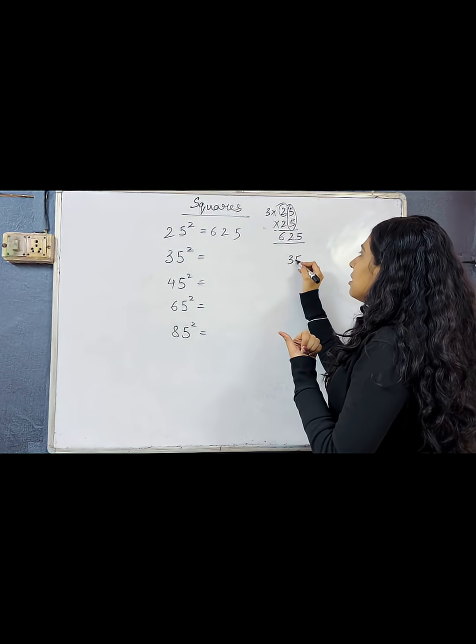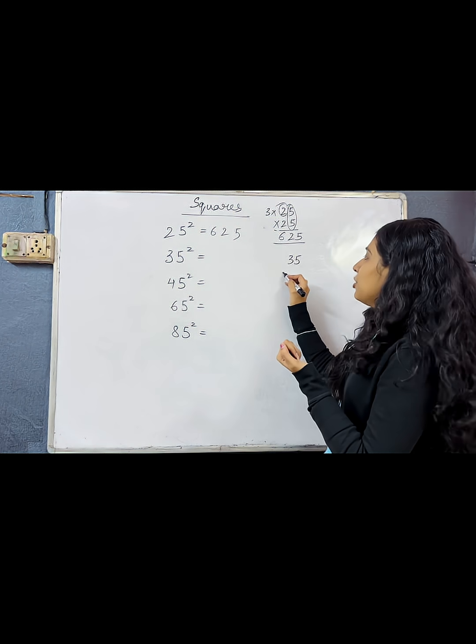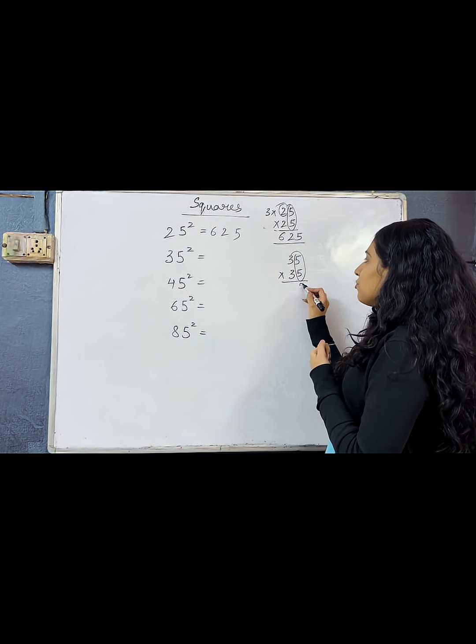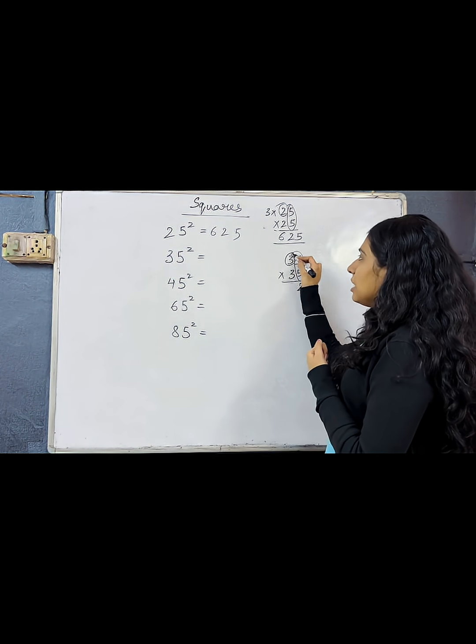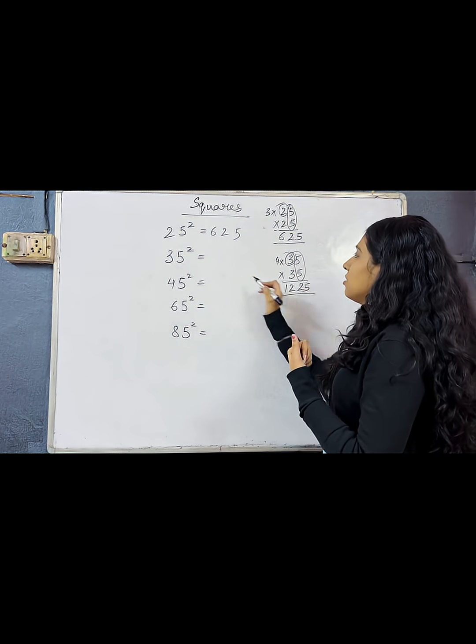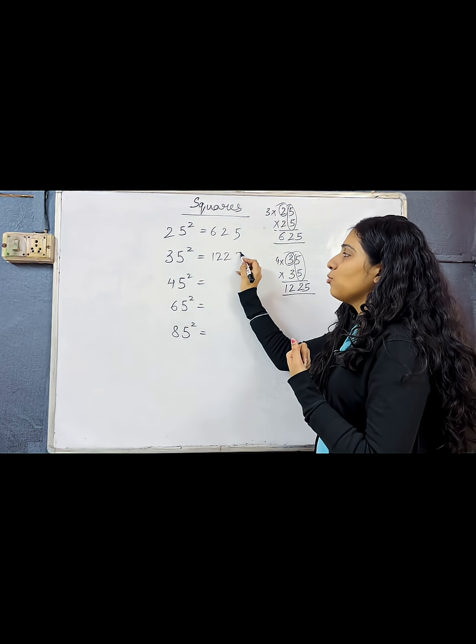Let's take one more example. 35 square means 35 into 35. 5 into 5, 25. 3's next number? 4. 3 into 4, 12. So the answer is 1225.